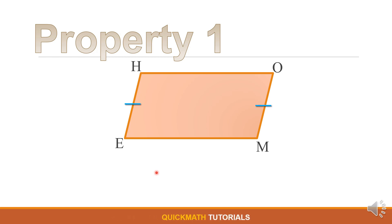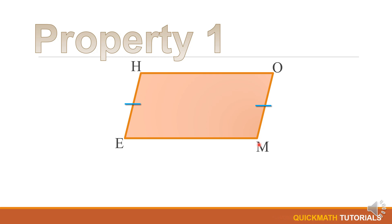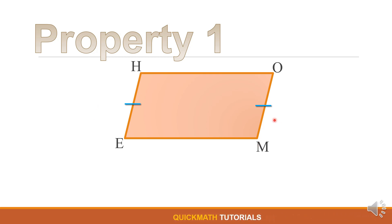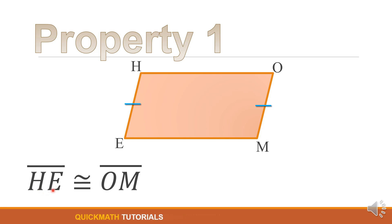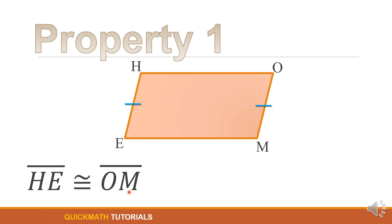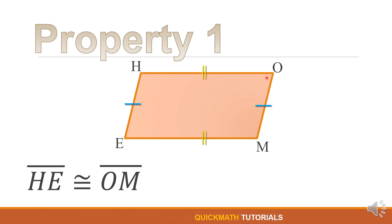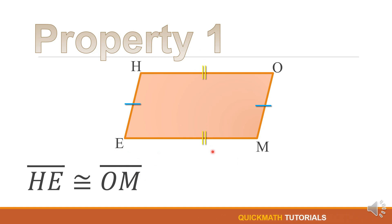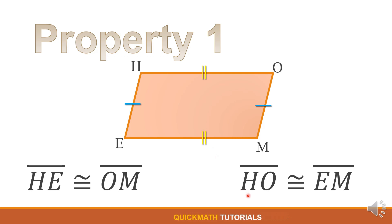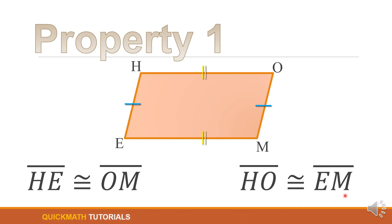In illustration, we have the opposite sides HE and OM — thus they are congruent or equal. In symbol, line segment HE is congruent to line segment OM. Another pair of opposite sides are HO and EM, so they are congruent: line segment HO is congruent to line segment EM.